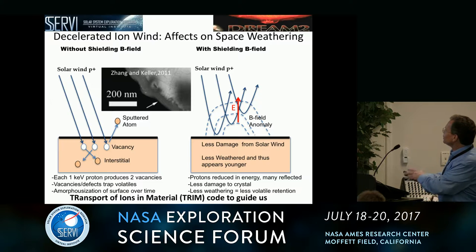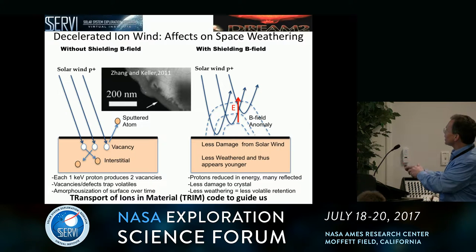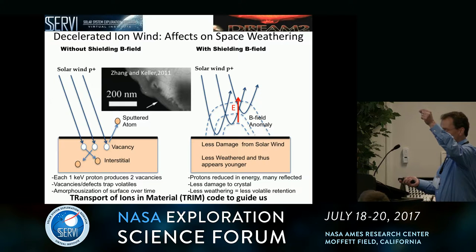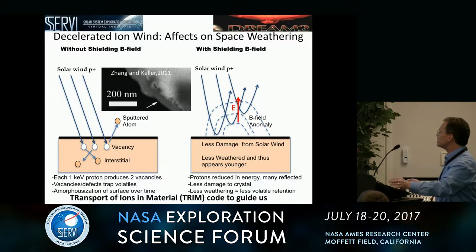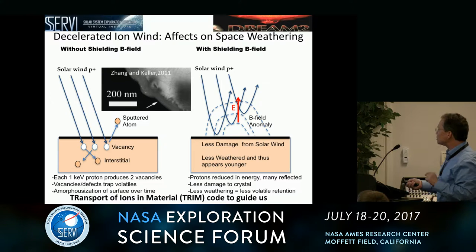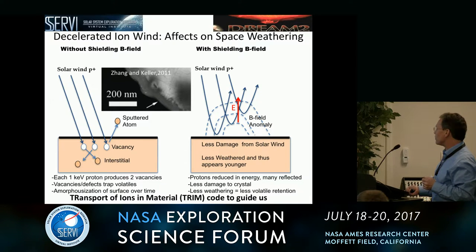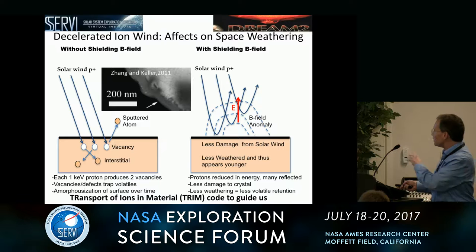If there is shielding, you're going to reject a lot of these incoming ions via the electric field. Those few that do get through are almost like they're on bungee cords — they come down and just kiss the surface, so they're not going to create the same amount of damage. They won't penetrate as deep, giving the appearance of less weathering from a space weather perspective. So we used TRIM — the transport of ions and material code — to flesh some of this out.